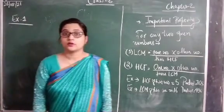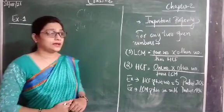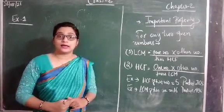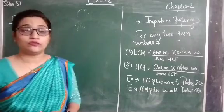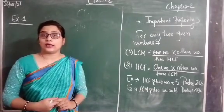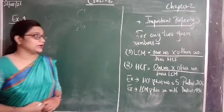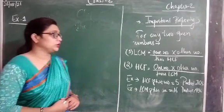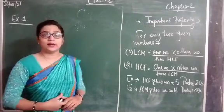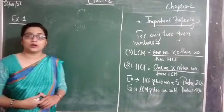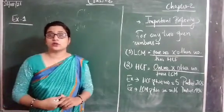Good morning everyone. Today we have to discuss an important property of chapter 2 — for any two given numbers, how to find the LCM and HCF. The first property is: LCM equals one number multiplied by the other number, divided by their HCF. Similarly, HCF equals one number multiplied by the other number, divided by their LCM. We are going to use these two properties in the examples.